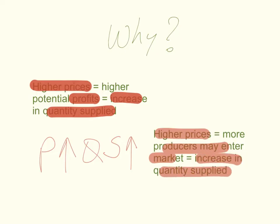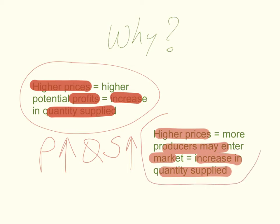Both of these reasons explain why there's a positive causal relationship between price and quantity supplied. When price rises, quantity supplied often increases, and when price falls, quantity supplied often decreases.